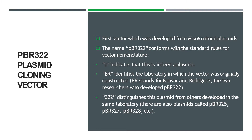Let's talk about the first plasmid: the pBR322 cloning vector. It was the first vector developed from E. coli natural plasmids. The name pBR322 conforms with standard rules for vector nomenclature: 'p' stands for plasmid, 'BR' identifies the laboratory and is derived from the names of the researchers Bolivar and Rodriguez who developed it, and '322' distinguishes this plasmid from others like pBR325, pBR327, and pBR328 developed in the same laboratory.